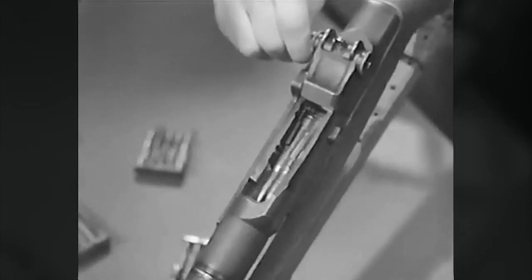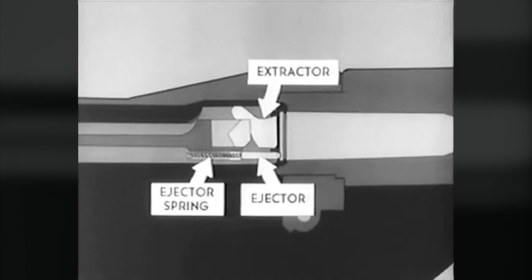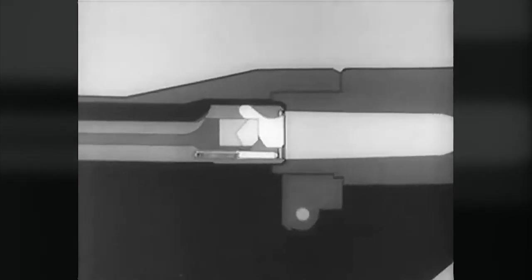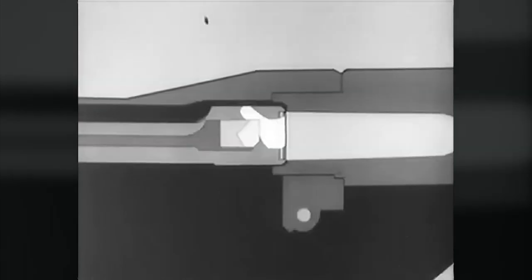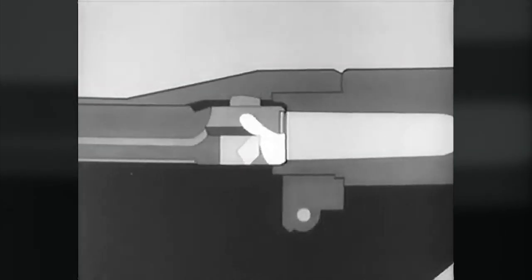Here's the same action on the rifle itself. Now as the bolt locks, the extractor snaps into the extractor groove, and the ejector is forced into the face of the bolt, compressing the ejector spring. Remember that this happens as the bolt is locking.